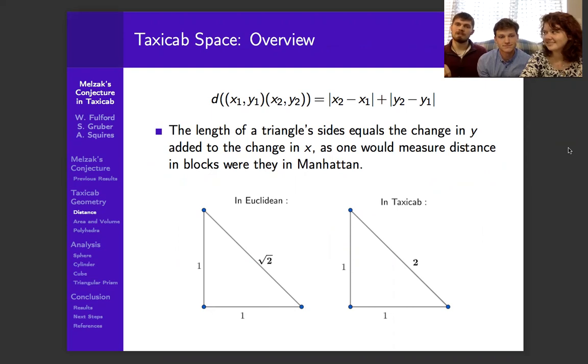Well, taxicab space is changing what the distance between two points is. So in Euclidean space, you have two points. The shortest distance between them is just a straight line through it, sometimes diagonally.